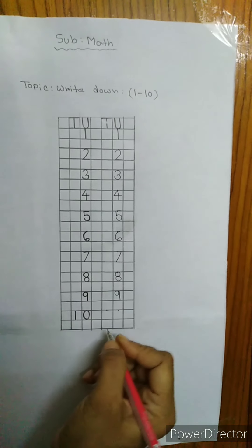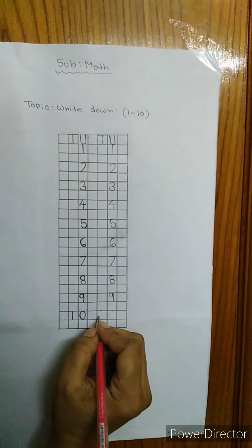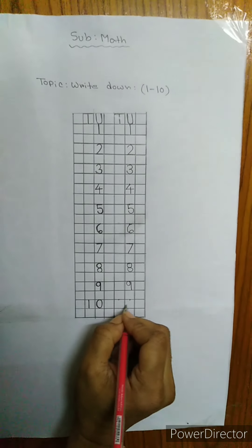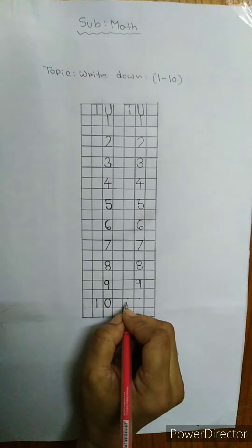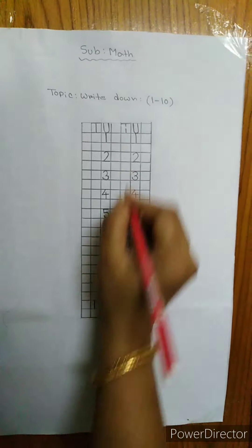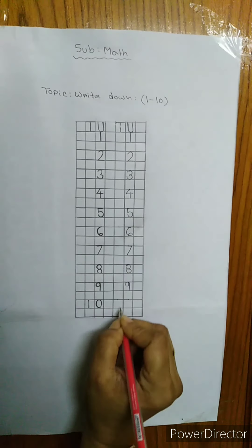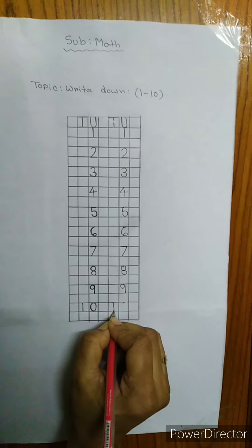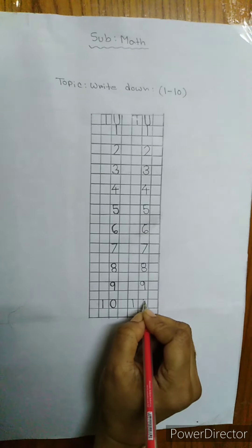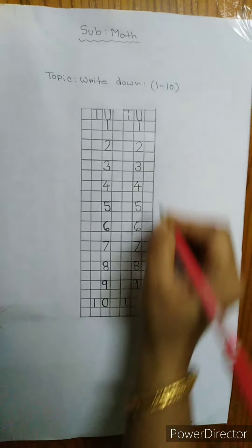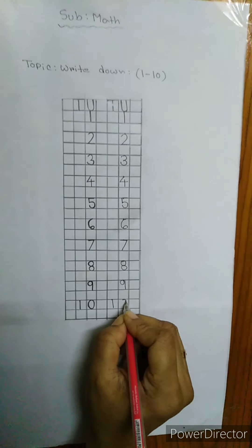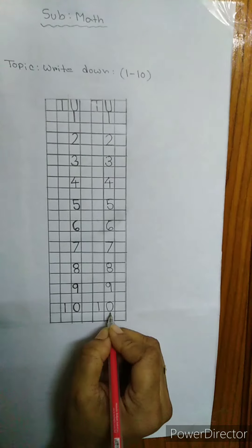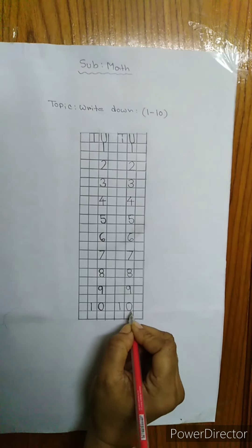Now, the next number is 10: 1, 0, 10. I will write 2 digits. The first digit I will write under T — I will write 1 under T. And 1, 0, 10 — I will write 0 under U.